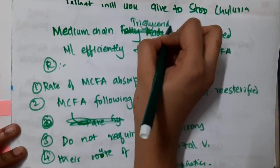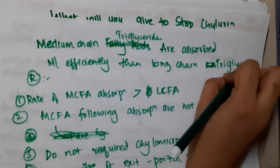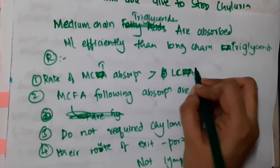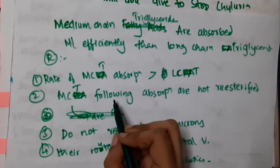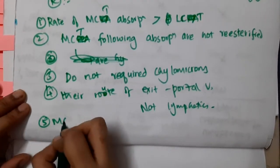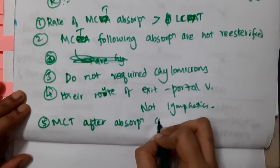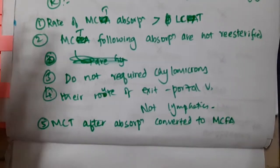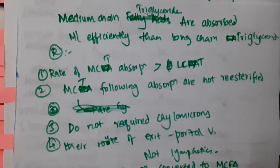One important clarification: in our diet, triglycerides are present, not free fatty acids. So if you compare medium chain triglycerides to long chain triglycerides, the rate of medium chain triglyceride absorption is greater. Medium chain triglycerides are immediately converted to medium chain fatty acids upon absorption. So it is medium chain triglycerides that are absorbed from the diet, not medium chain fatty acids.